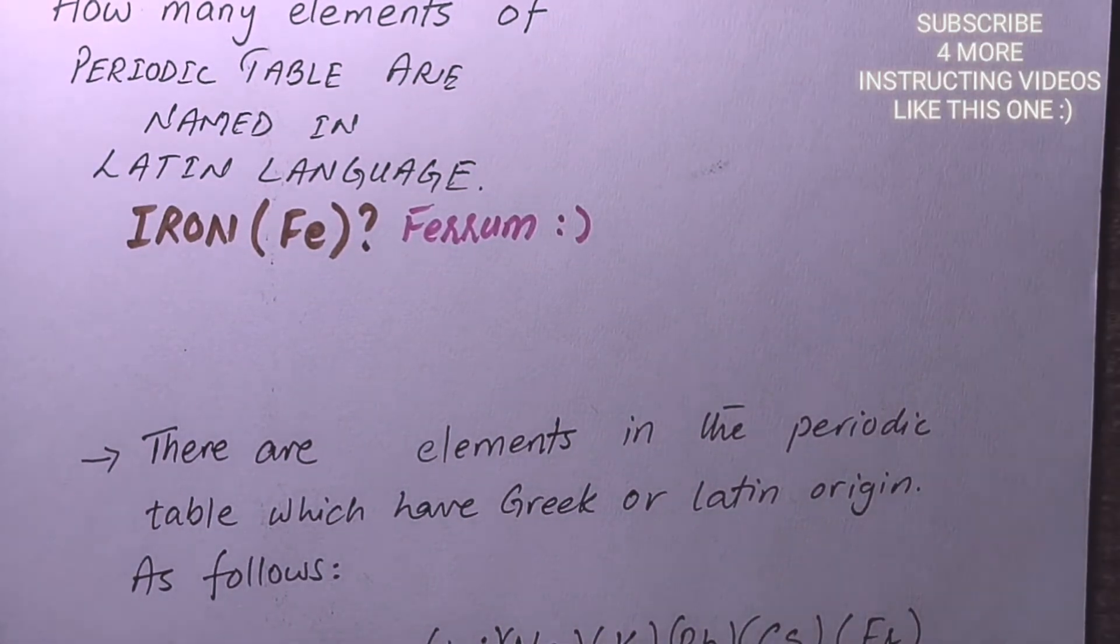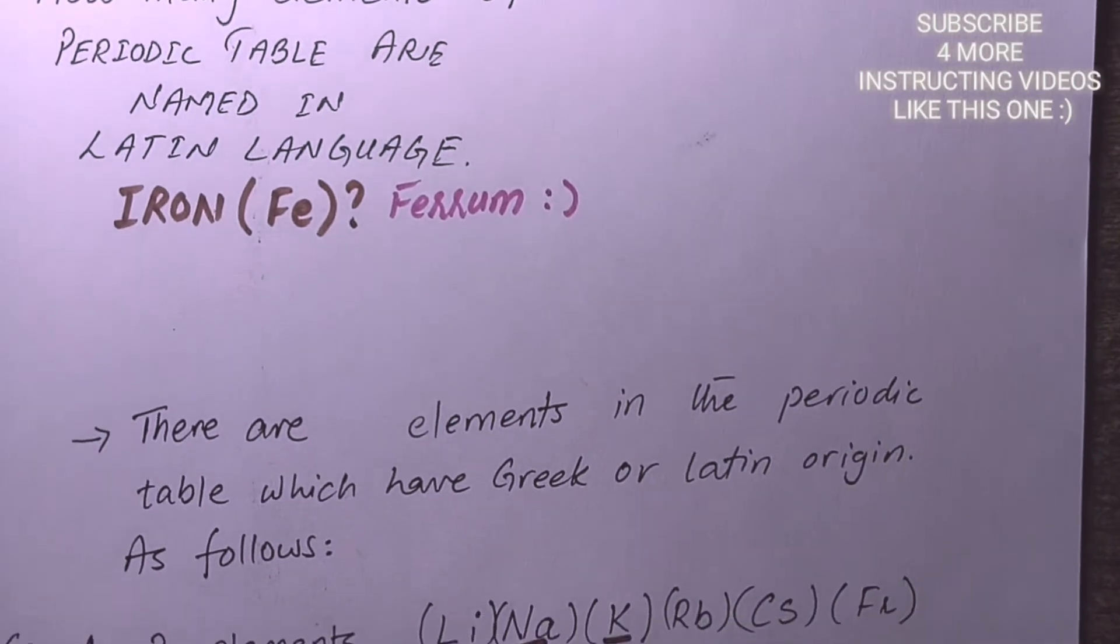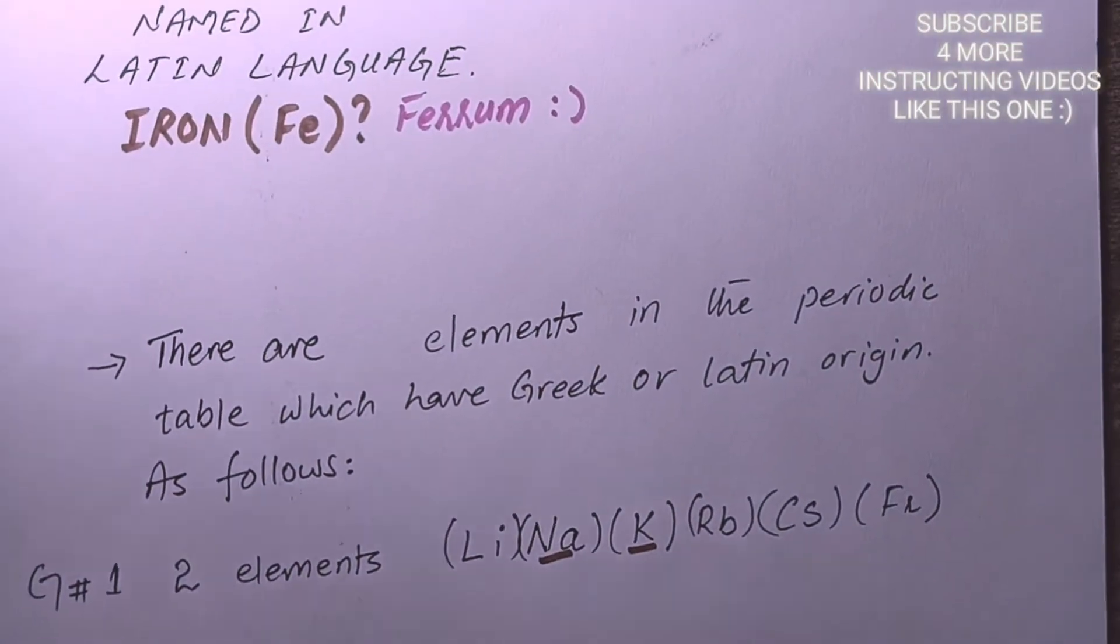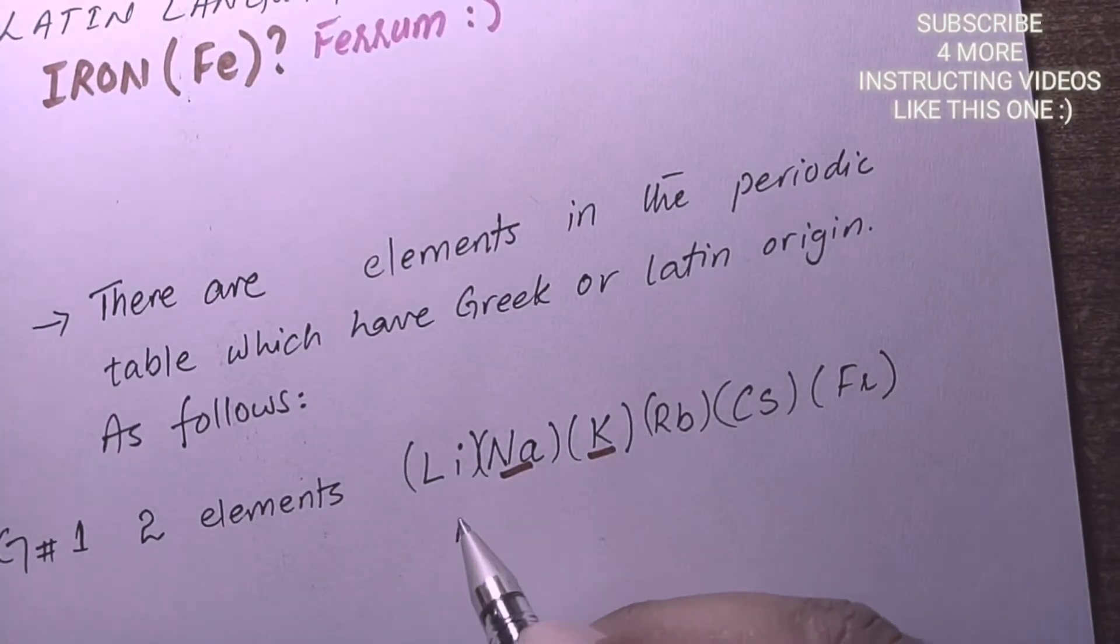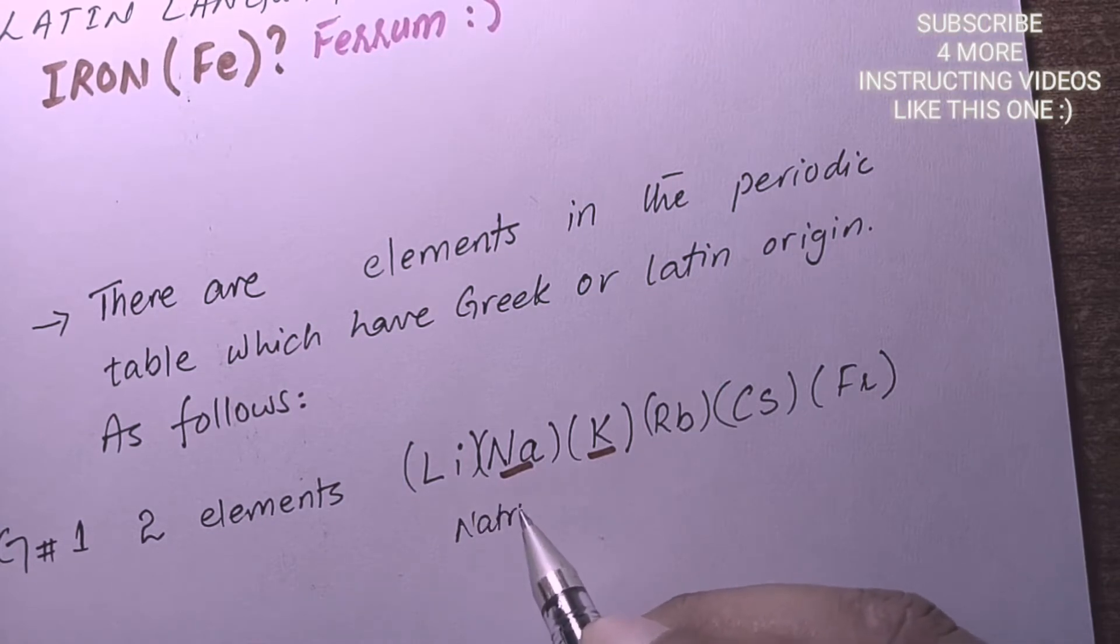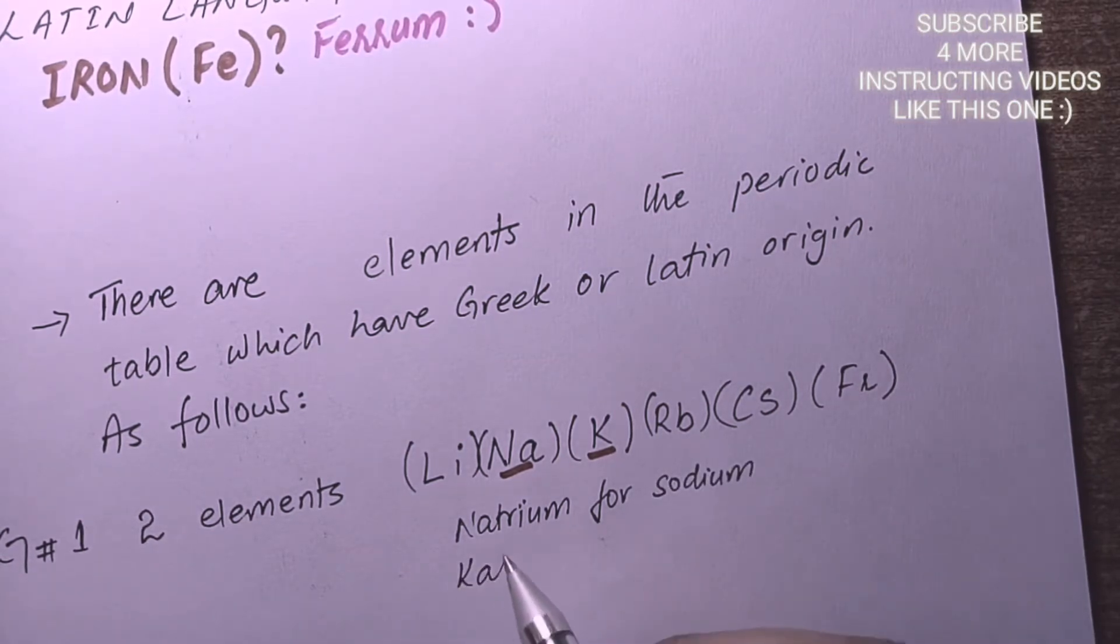Let's talk about the first group. There are two elements which have Latin names. The names for these two elements are Natrium for sodium and Kalium for potassium.